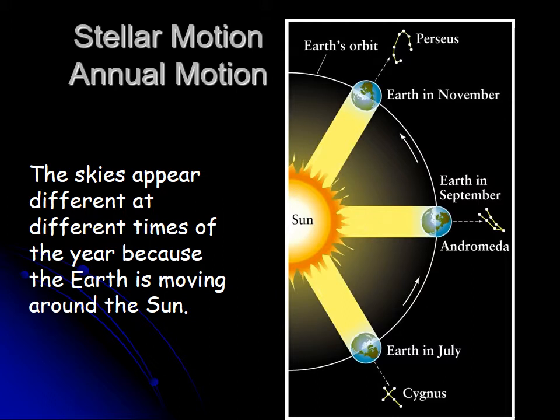The stars all rise about four minutes earlier every day and set four minutes earlier every day. So a star rising at 10 p.m. tonight will rise at 9:56 tomorrow night, 9:52 the next night. After a week, it's 28 minutes earlier — almost half an hour. After two weeks, it's 56 minutes earlier, almost an hour.